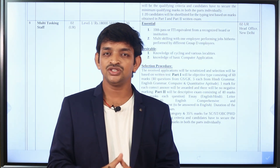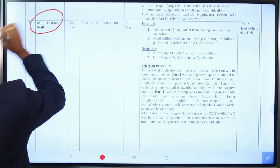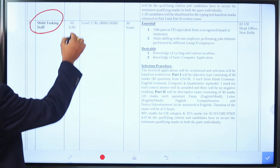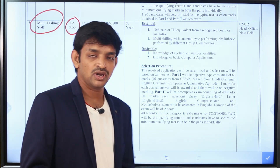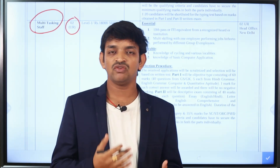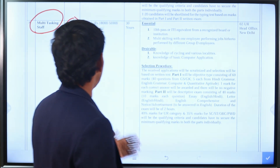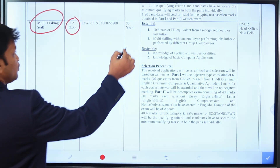Now let's look at the second post: MTS, which stands for Multi-Tasking Staff. There are two posts available, including unreserved categories. The upper age limit for this post is 30 years.